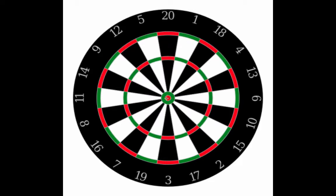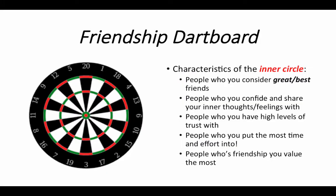Just to review: we have our inner circle which is our bullseye, our intermediate circle with the triple circle on the perimeter, and then our outer circle. For this lesson we're going to ignore all the numbers on the outside. Now that we're all on the same page with the visual on the three different friendship circles, I'm first going to talk about the characteristics of the inner circle.